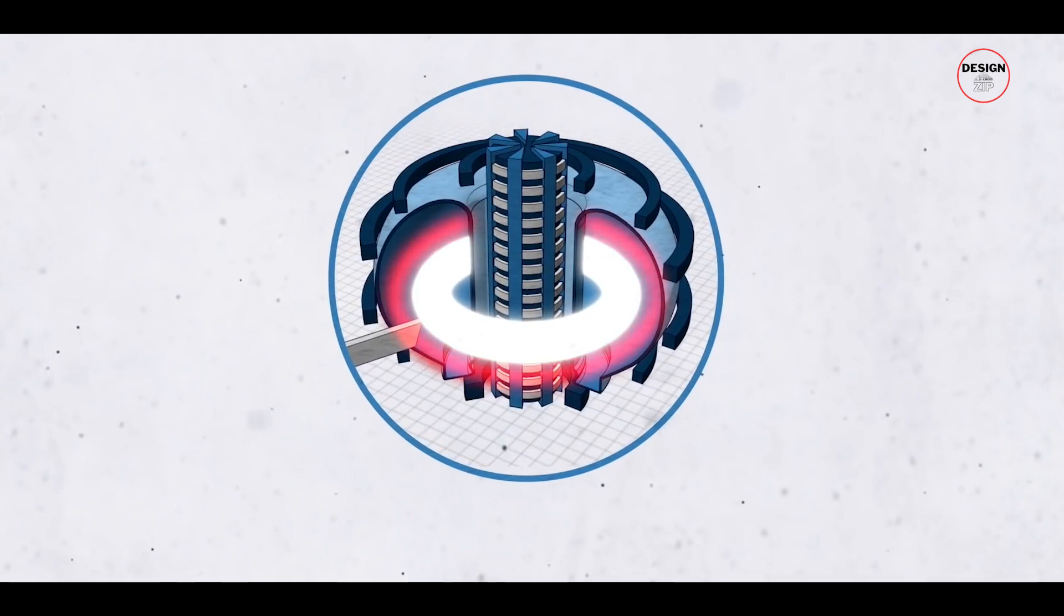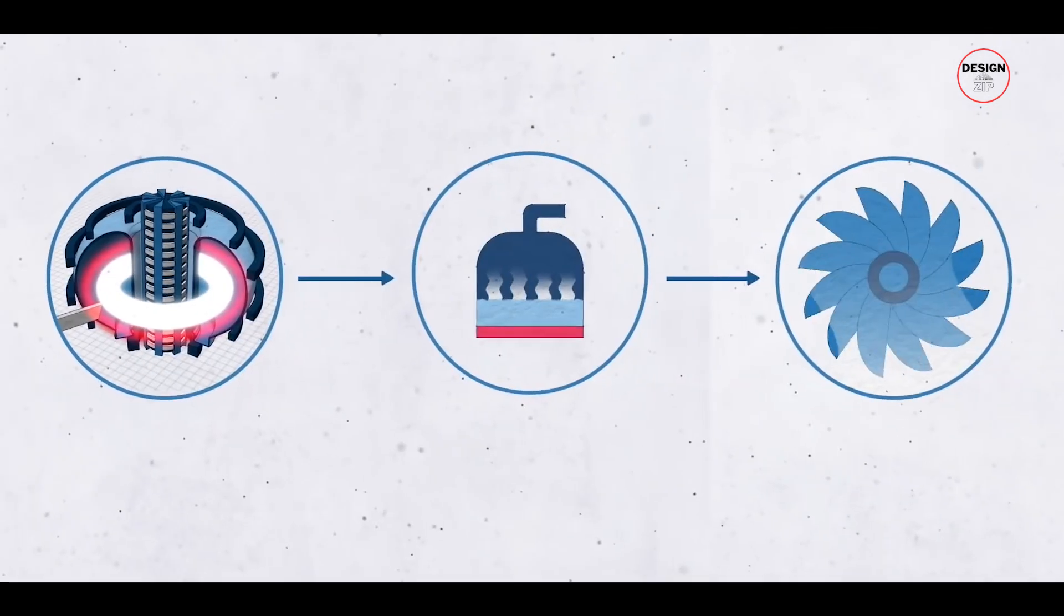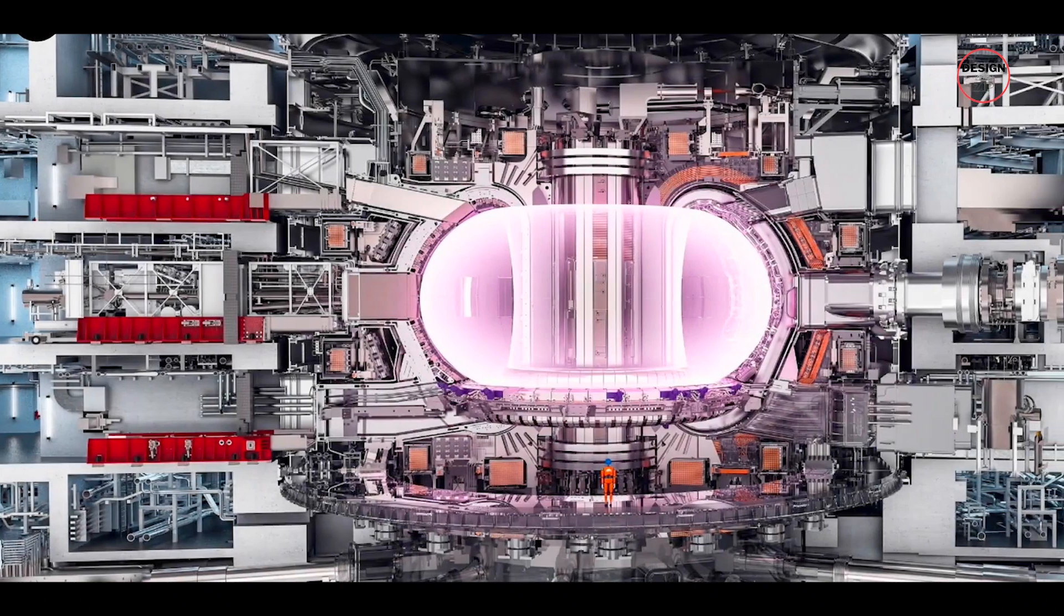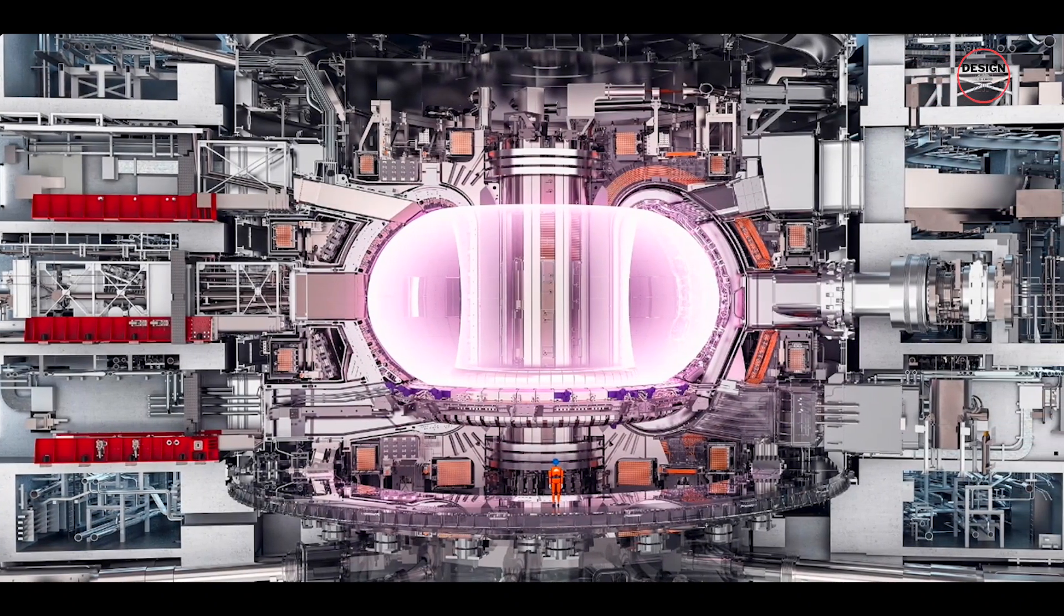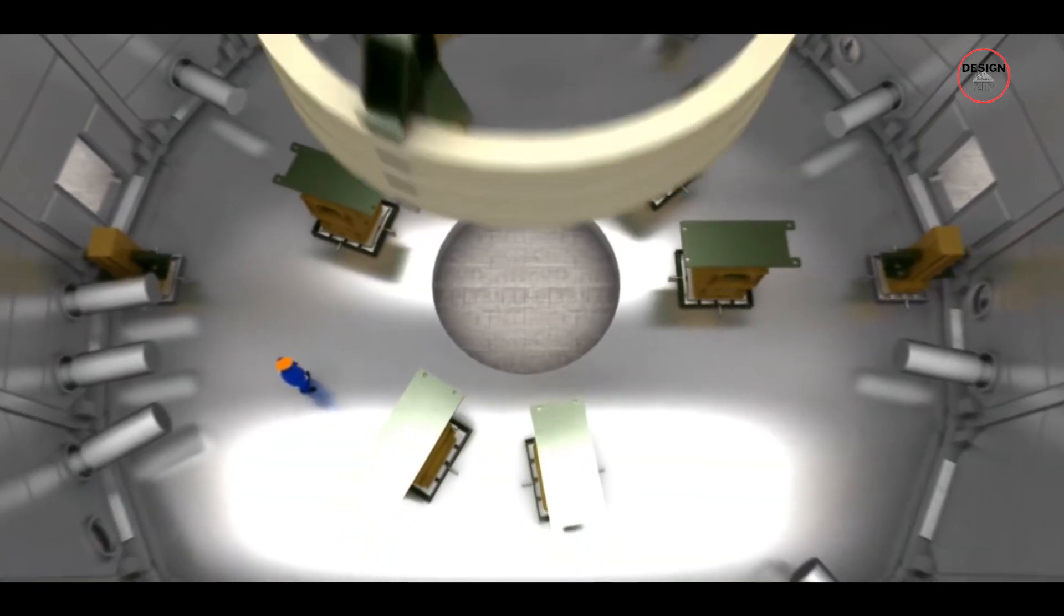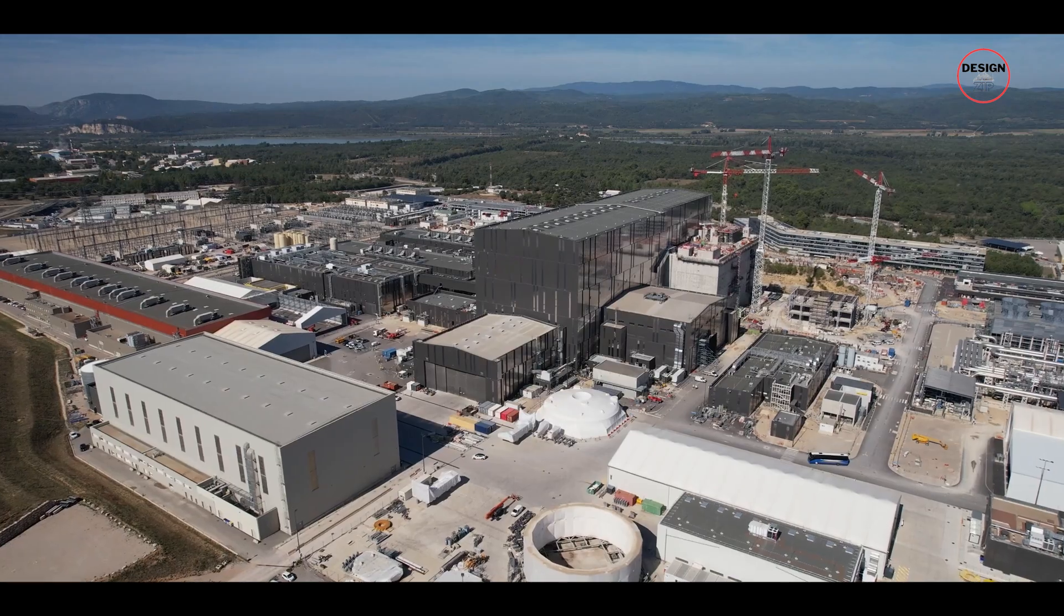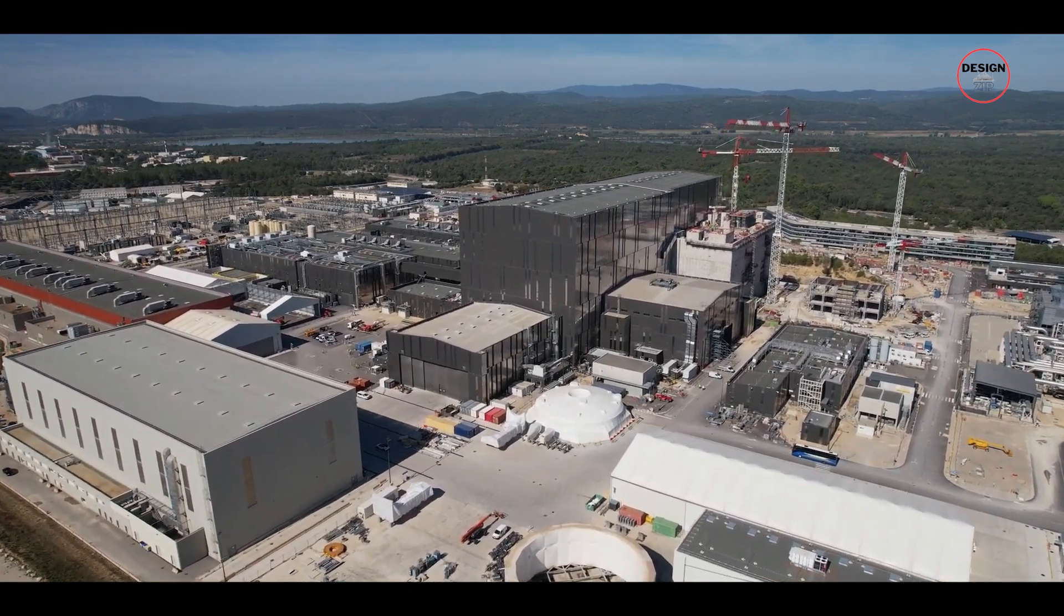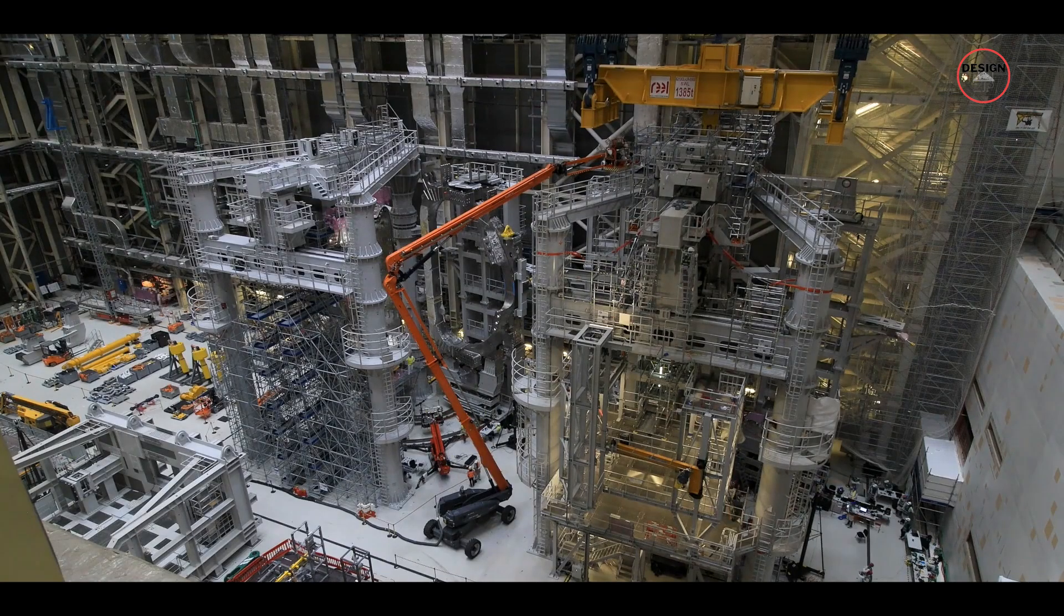Strangely, the overall goal of ITER was never to produce energy for the electricity grid. The primary goal of ITER is to provide valuable data for other fusion projects and to attract private investments to commercialize fusion technology. But with the recent delays, private companies might take the lead, potentially making ITER unnecessary.